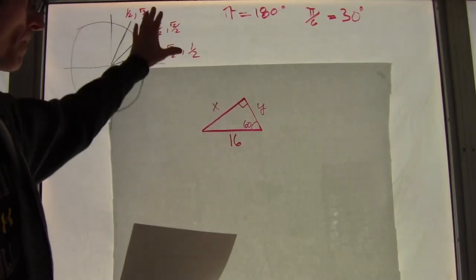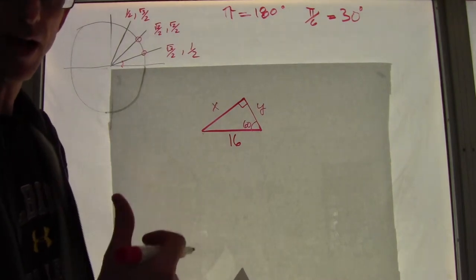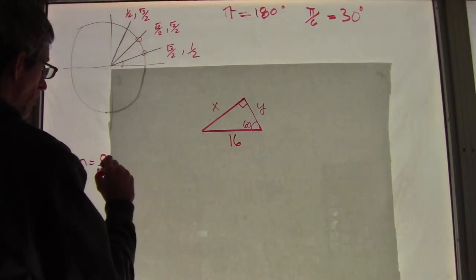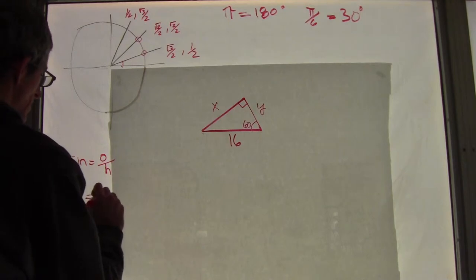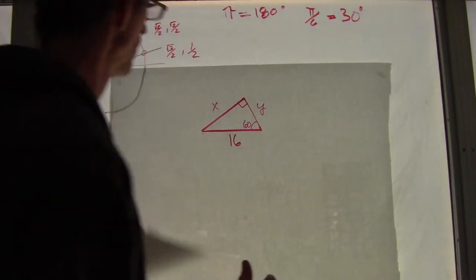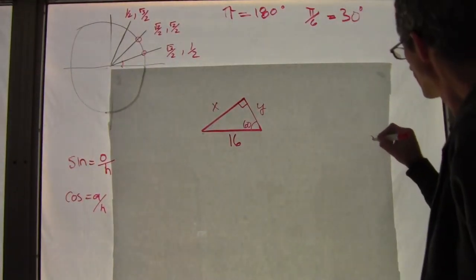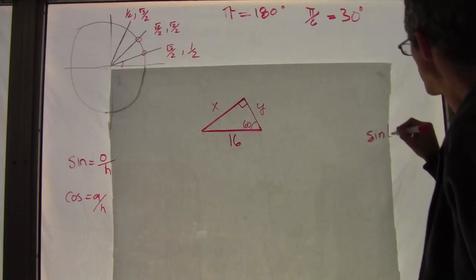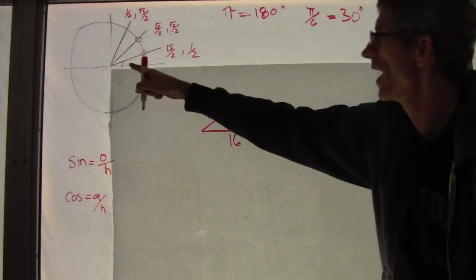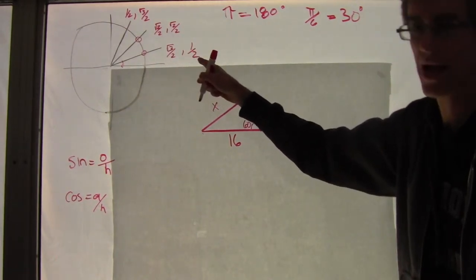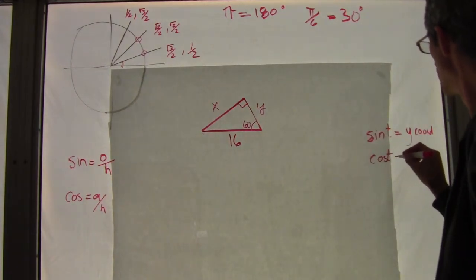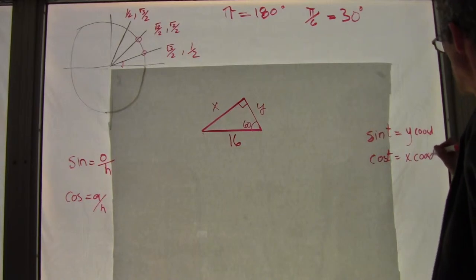But using the unit circle, what I'm going to do is just remember two things. Sine equals opposite over hypotenuse. Sine equals the opposite side over the hypotenuse, and cosine is equal to the adjacent over hypotenuse. That's number one. Then number two, you're going to remember from your unit circle that the sine of an angle, I just call it sine of t, is always equal to the y-coordinate. The y-coordinate. So the sine of 30 is going to be 1 half, because that's the y-coordinate. That's the x, that's the y.